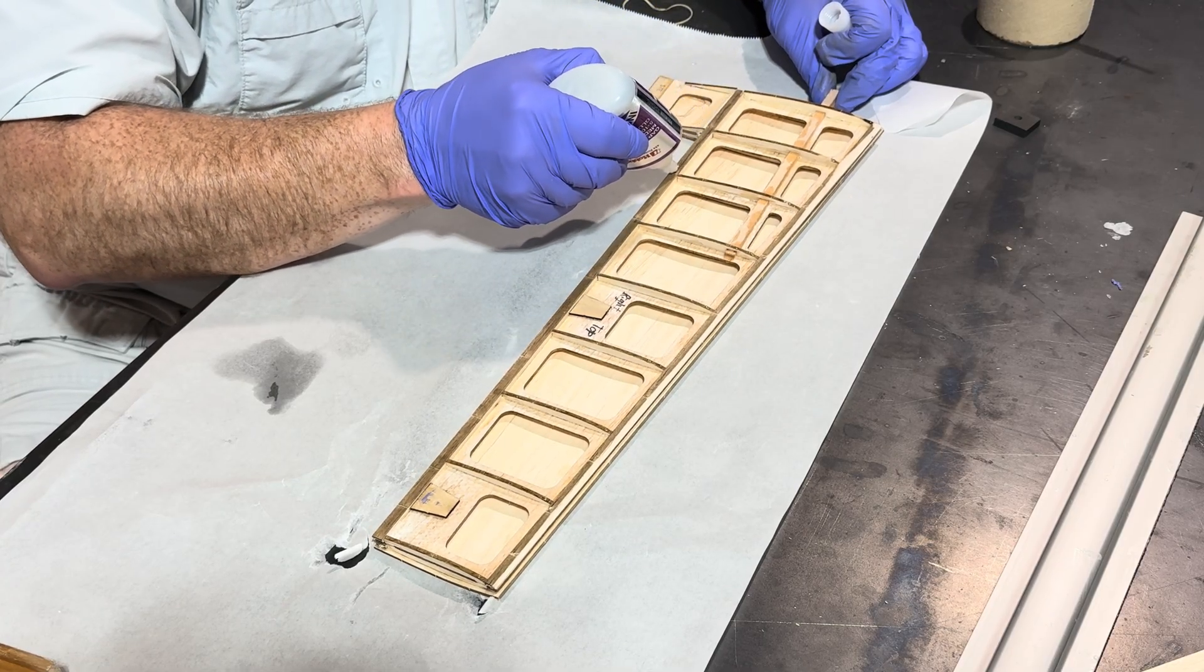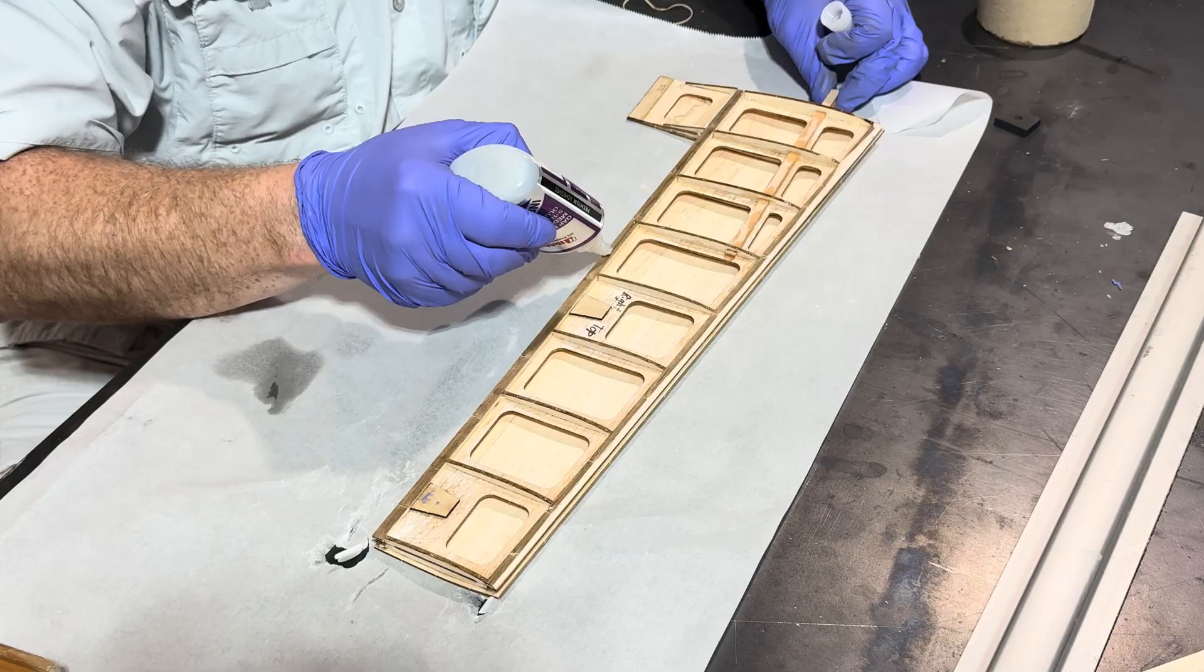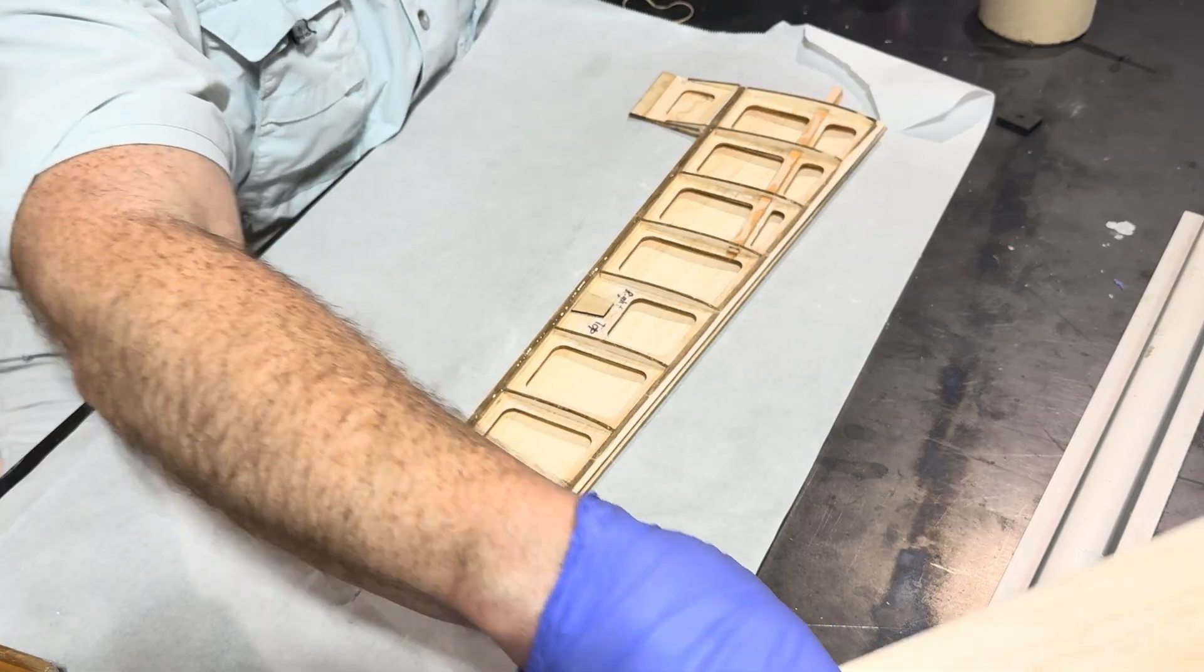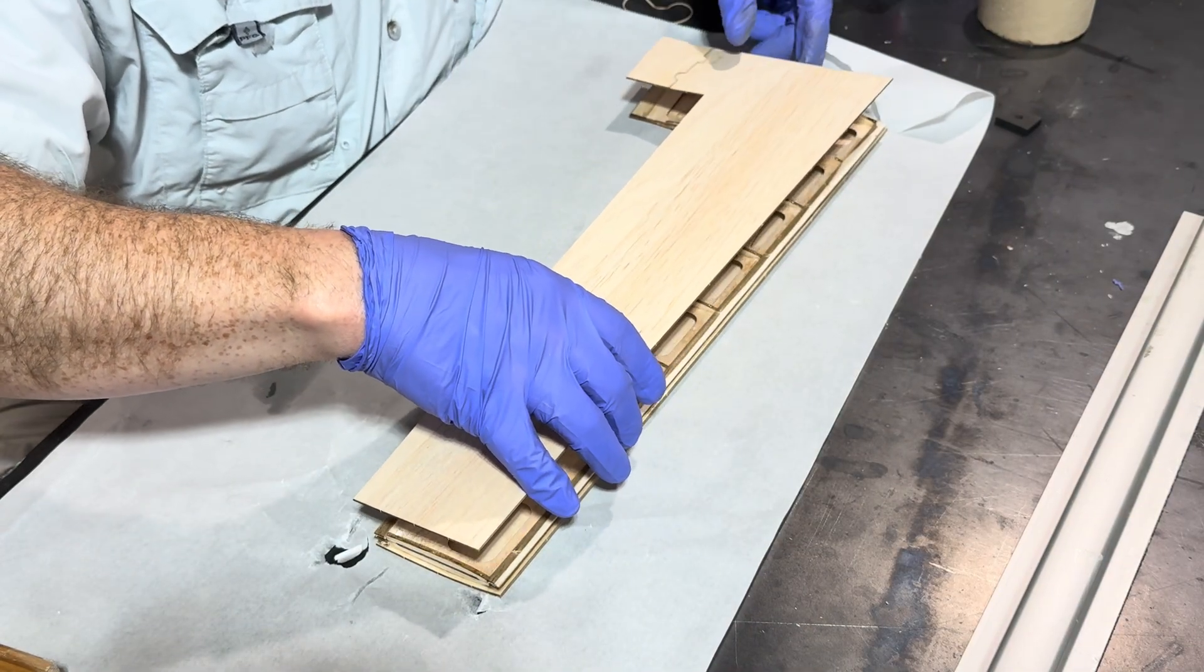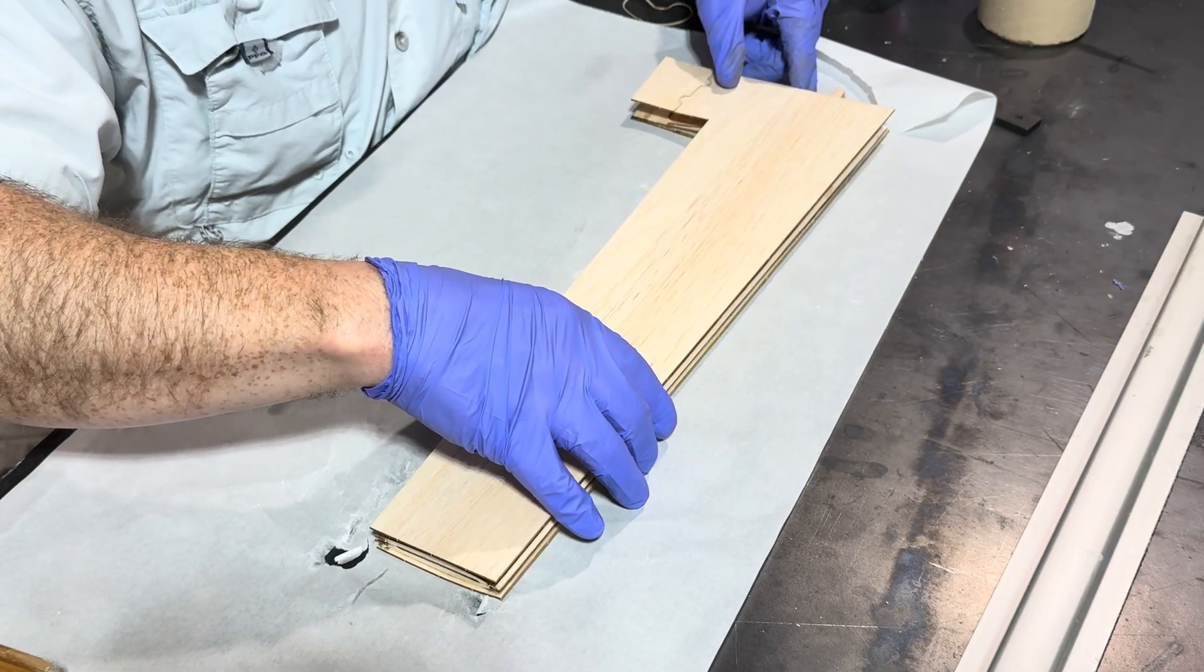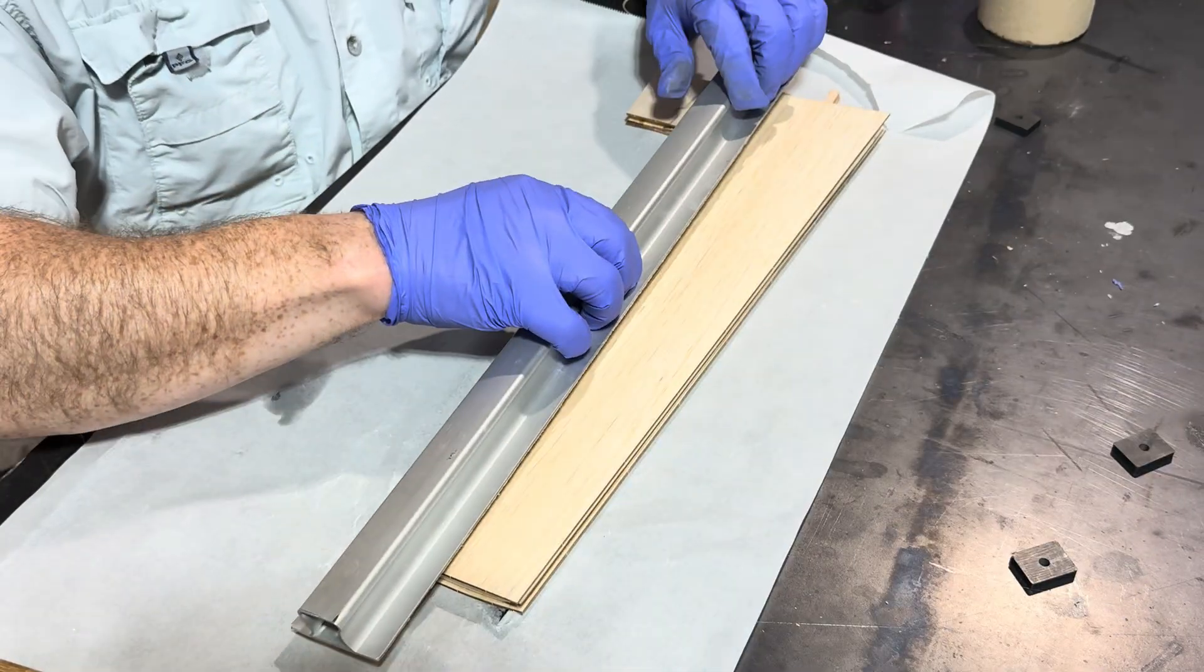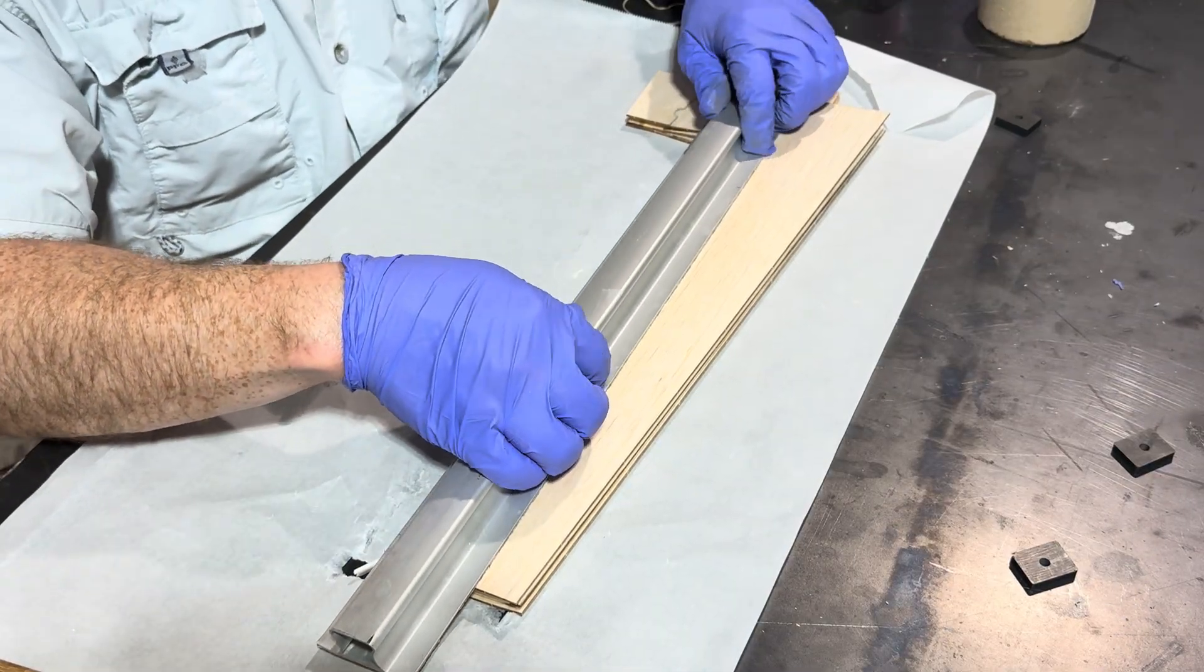So when you're putting on the skins, you're noticing that we're using thick CA on the ribs and medium CA on the trailing edge. You don't put anything on the leading edge. What this does by doing it this way, it gives you the ability to properly center the skins.